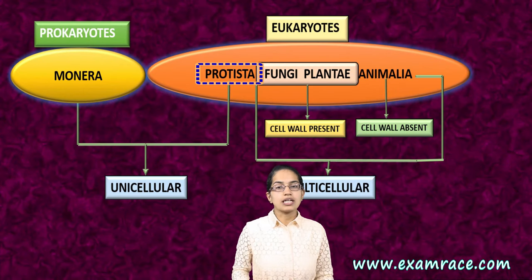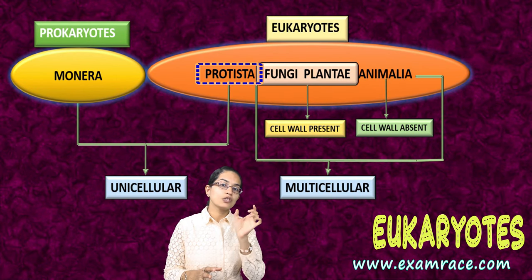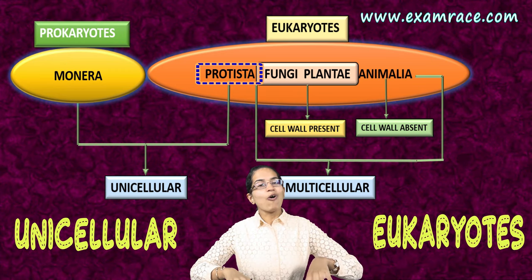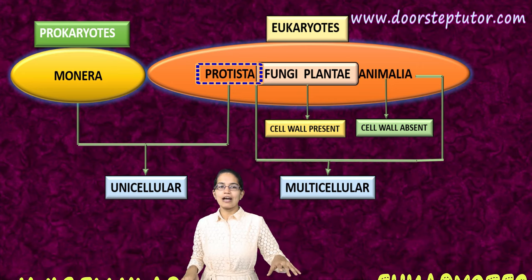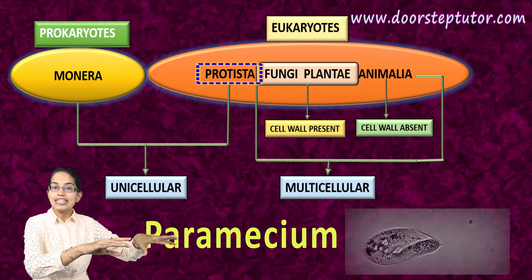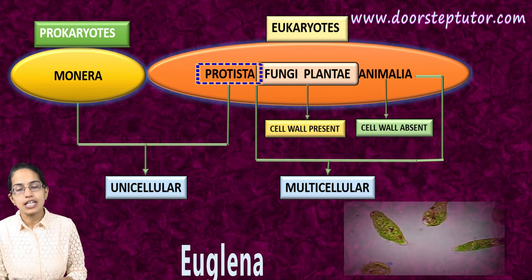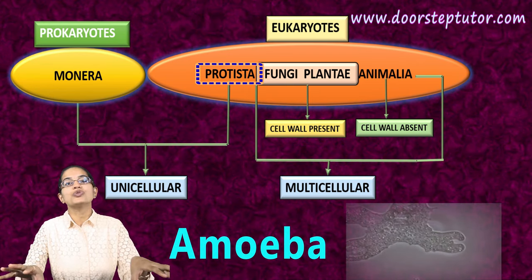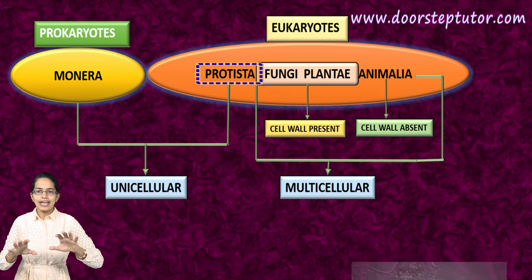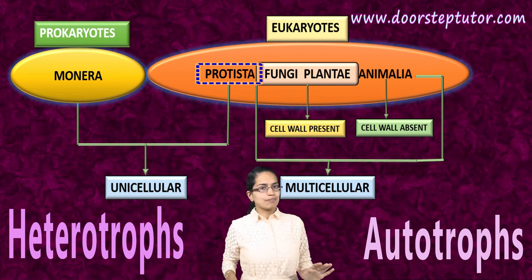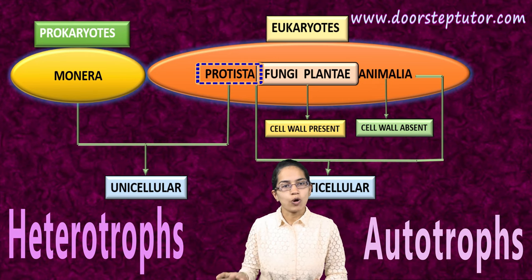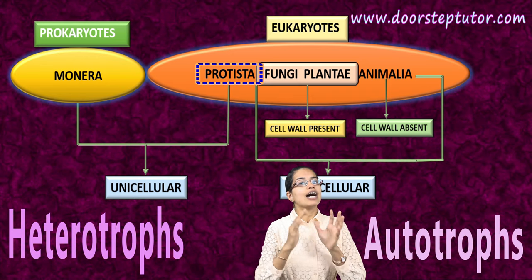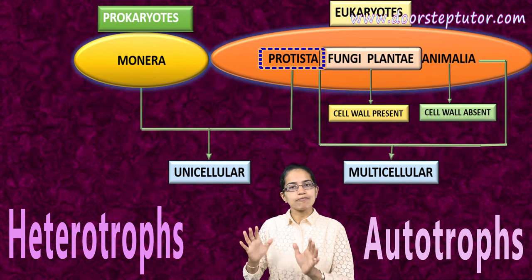Protista are unicellular but they are eukaryotes — they have a well-defined nucleus. They also have cilia or flagella for movement. For example, Paramecium has cilia for movement, Euglena has flagella, and Amoeba has pseudopodia or false legs for movement. Protista can be heterotrophs or autotrophs — they may or may not be able to produce their own food, but they are eukaryotes with a well-defined nucleus.